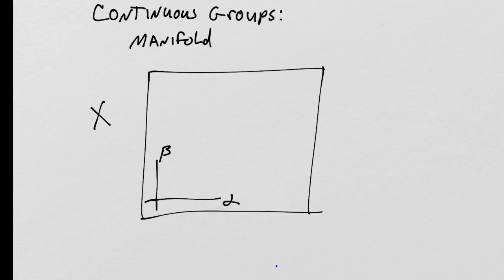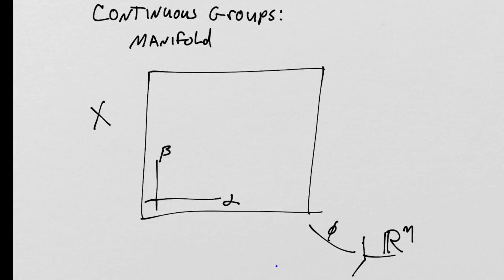For simplicity, I'll put a coordinate grid on X with coordinates α and β, and there are η of these coordinates — whatever the dimension of the manifold is. All the little mappings go to R^η. I'll use ψ for these mappings. So we have the manifold structure on the set X.